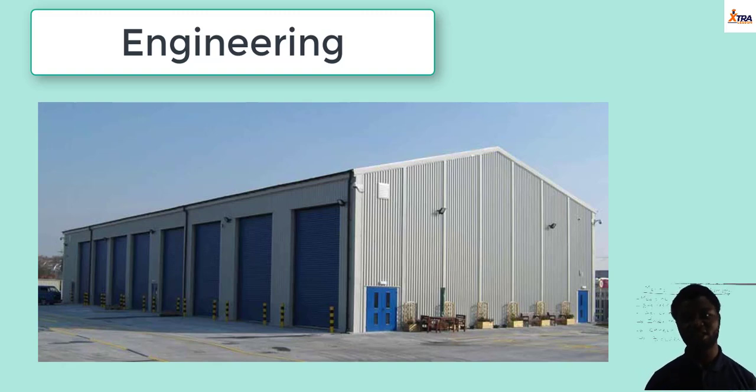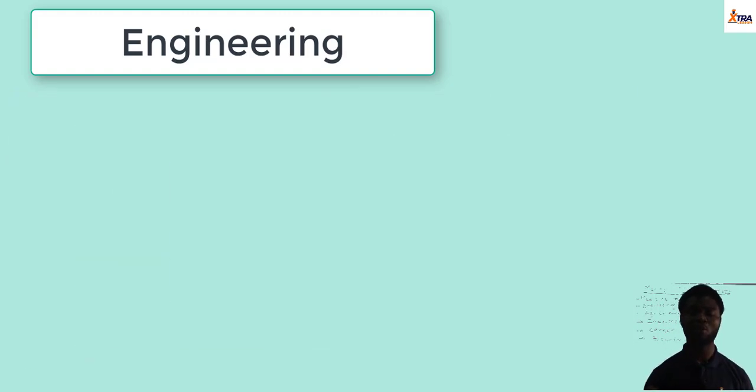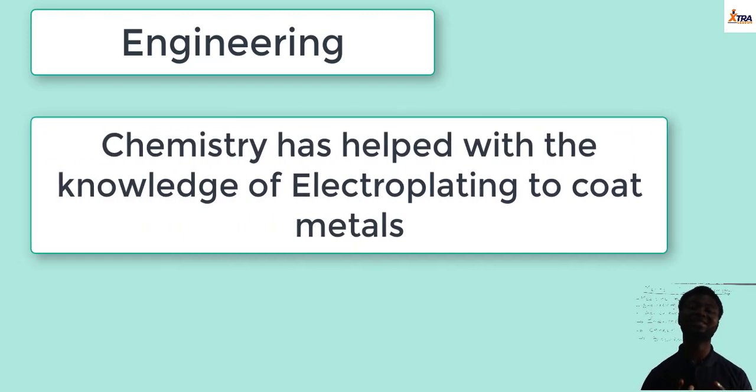That means that after five years or ten years, these highly expensive, highly sophisticated metal networks begin to suffer corrosion. And this corrosion can cause a very high level of damage, both financially and in terms of goods transported from one point to another, and it can lead to a very big loss in that engineering firm. So what does chemistry help us do? Chemistry has helped us with the knowledge of electroplating to coat these metals, making them corrosion resistant.